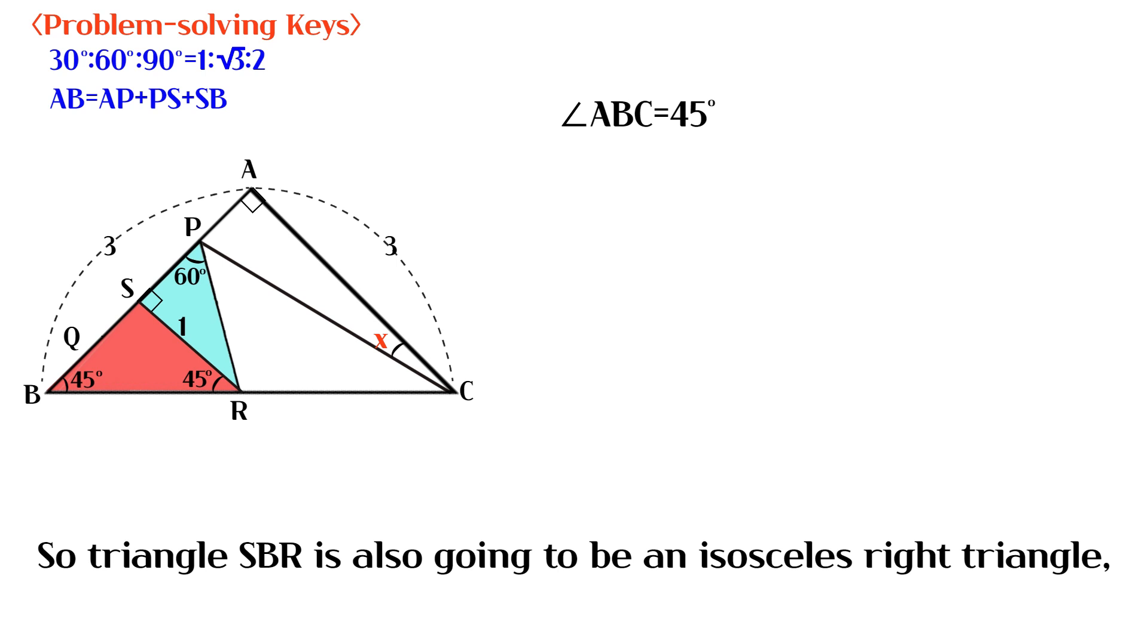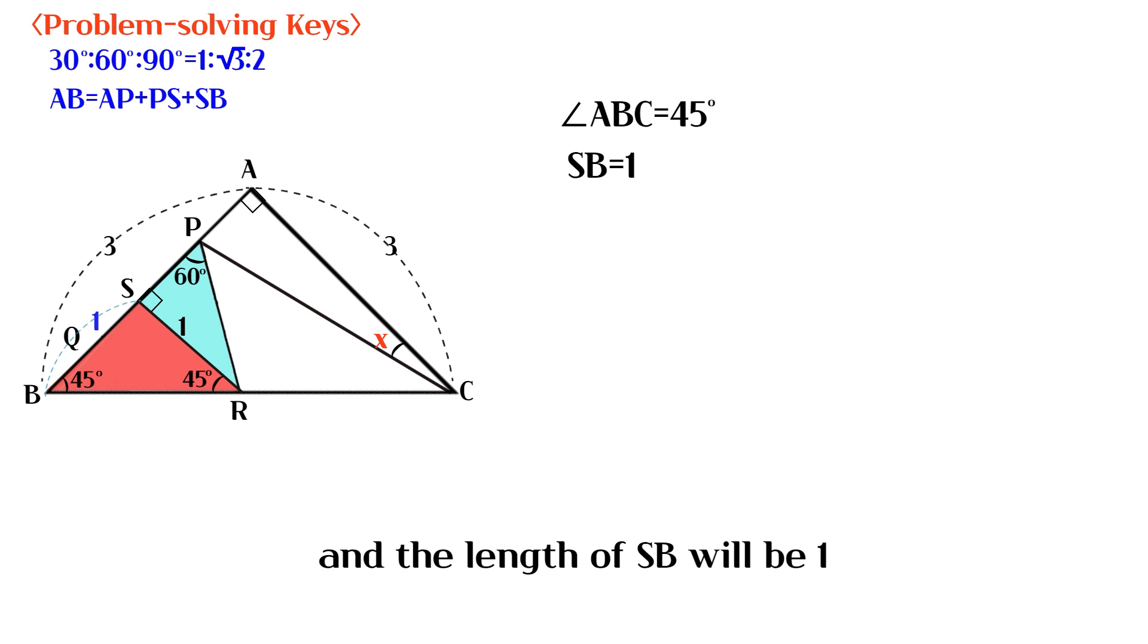So triangle SBR is also going to be an isosceles right triangle, and the length of SB will be 1.